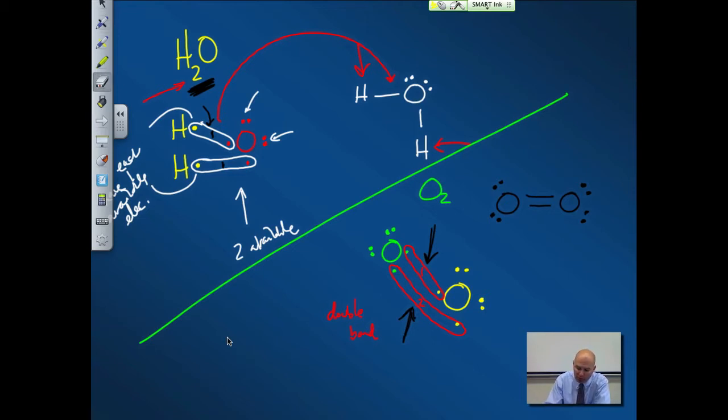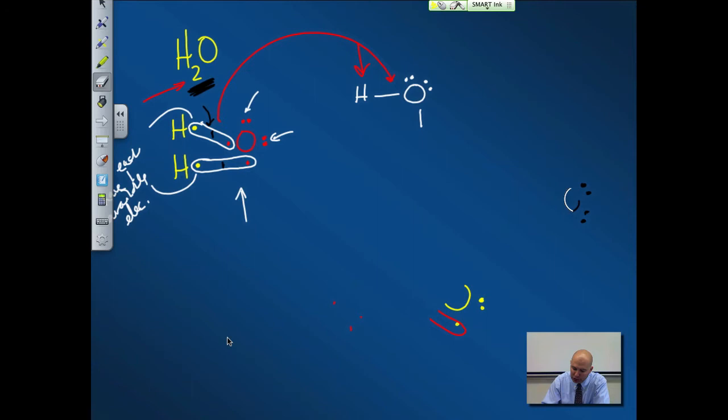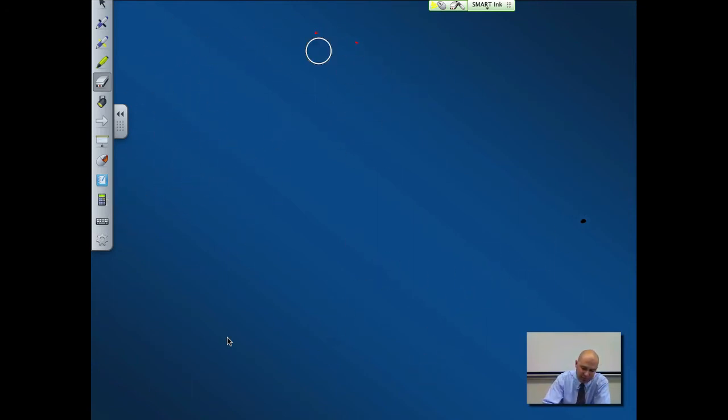I'm going to do one more example before I get into the geometry. Let's say we have CH4, carbon with four hydrogens. You'll see this as an example later. Carbon has one, two, three, four available electrons. Hydrogen has one, but there are four of them. So I'll draw four hydrogens. We've got one, two, three, four bonds.